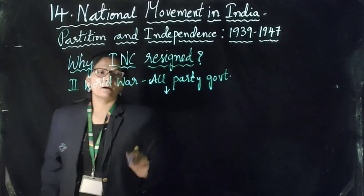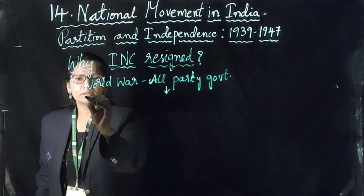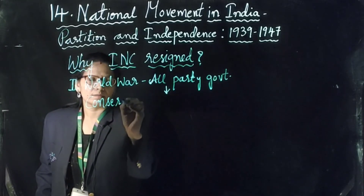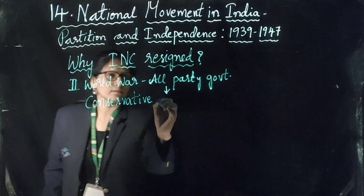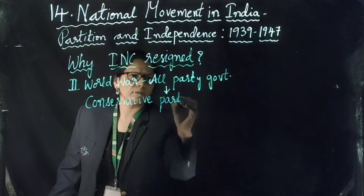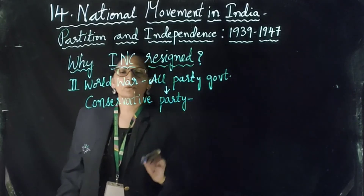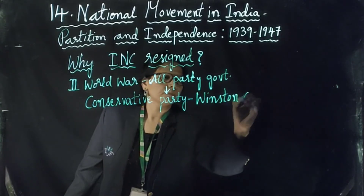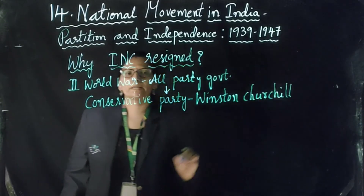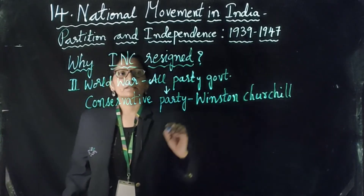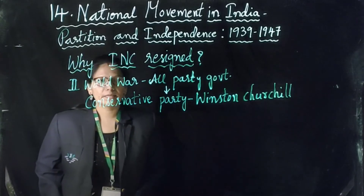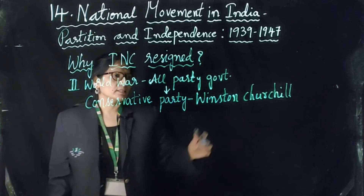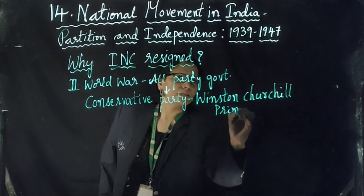The all-party government in Britain during the Second World War was headed by the Conservative Party. The leader of the Conservative Party was Winston Churchill, who was the Prime Minister of Britain during the Second World War.